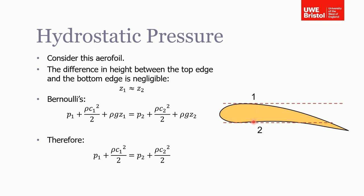If we consider that, we would write it like this. But aircraft wings tend to be quite narrow, so the change in height between these two would be negligible. Therefore, you can say that z1 would be approximately equal to z2.